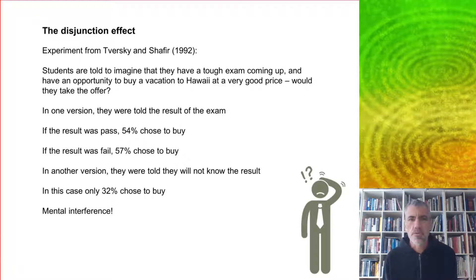But then there was another version in which they were told they will not know the result. In this case, only 32% chose to buy, which is odd when you think about it because the outcomes can only be pass or fail. You'd expect it to be like the average, about 55.5%. But only 32% chose to buy. This is an example of some kind of mental interference effect.